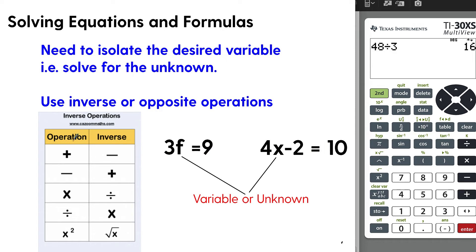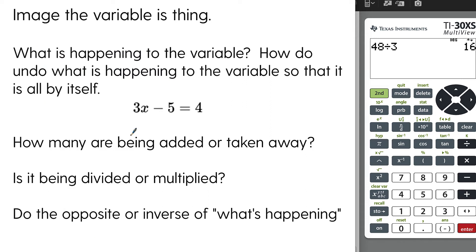We'll use inverse or opposite operations. If the operation is addition, the opposite is subtraction. The opposite of subtraction is addition. Multiplication and division undo each other — they're inverses. Think of the variable as a thing with operations happening to it, and our goal is to undo those operations to get the variable all by itself.